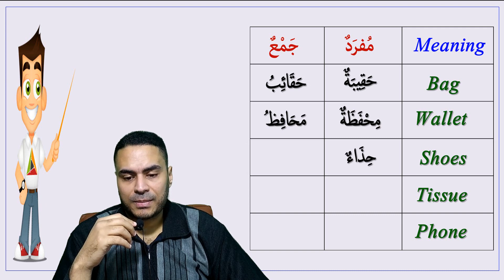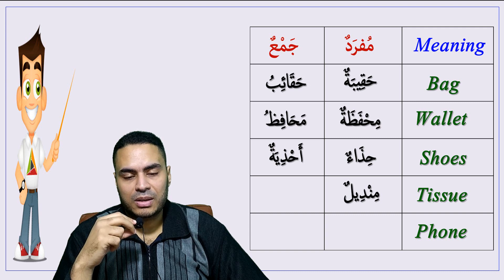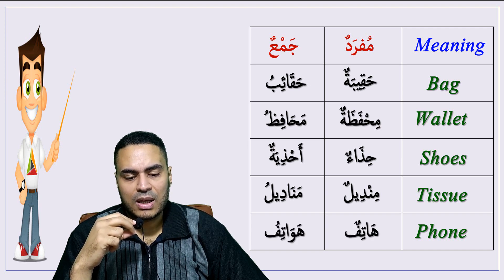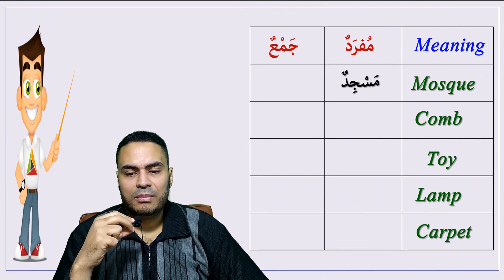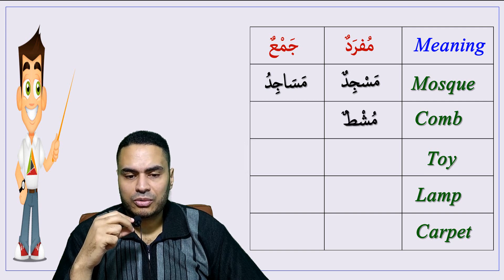Shoes — hidhaaun, plural: ahdhiya. Tissue — mindilun, plural: manadil. Phone — hatifun, plural: hawatif. Mosque — masjidun, plural: masajid. Comb — mushtun, plural: amshat.